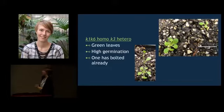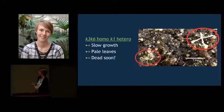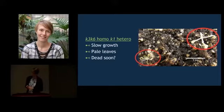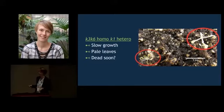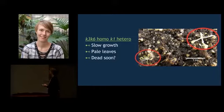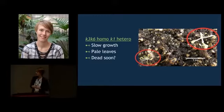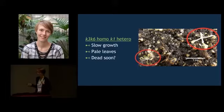On the other hand, the homozygous K3K6 and heterozygous K1 mutants are not looking so good. On sucrose they showed pale cotyledons and slowed growth, and now that they've been moved to soil they're looking a little worse for the wear, as you can see right here. We assume they'll probably be dead soon, simply because we know the K3K6 mutant cannot survive on soil.